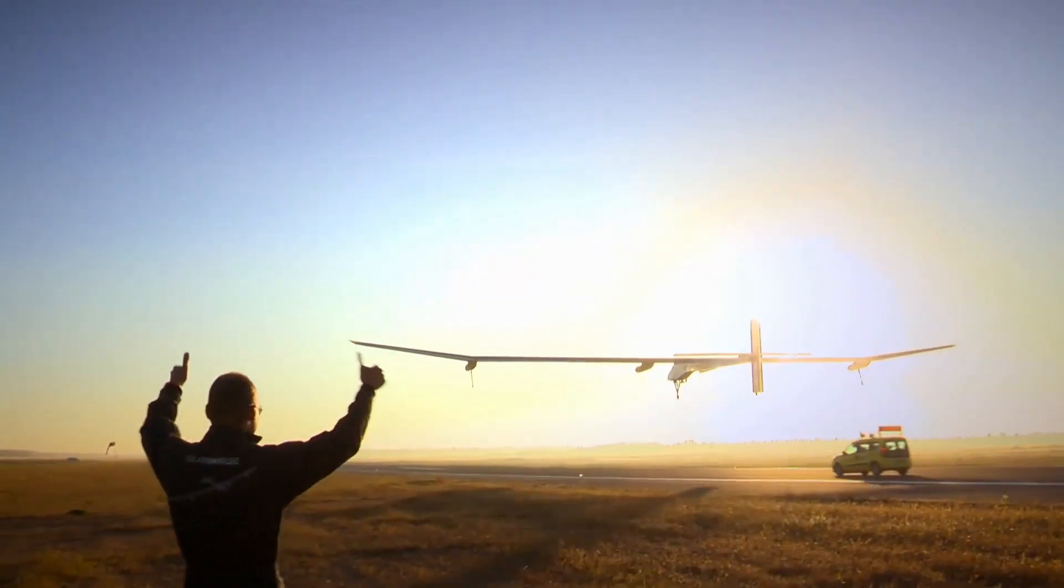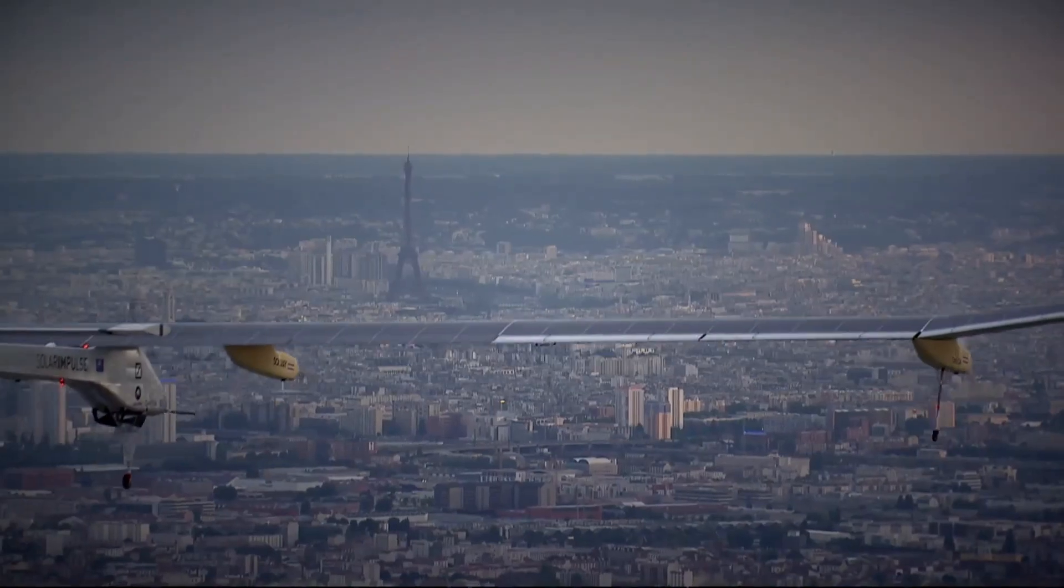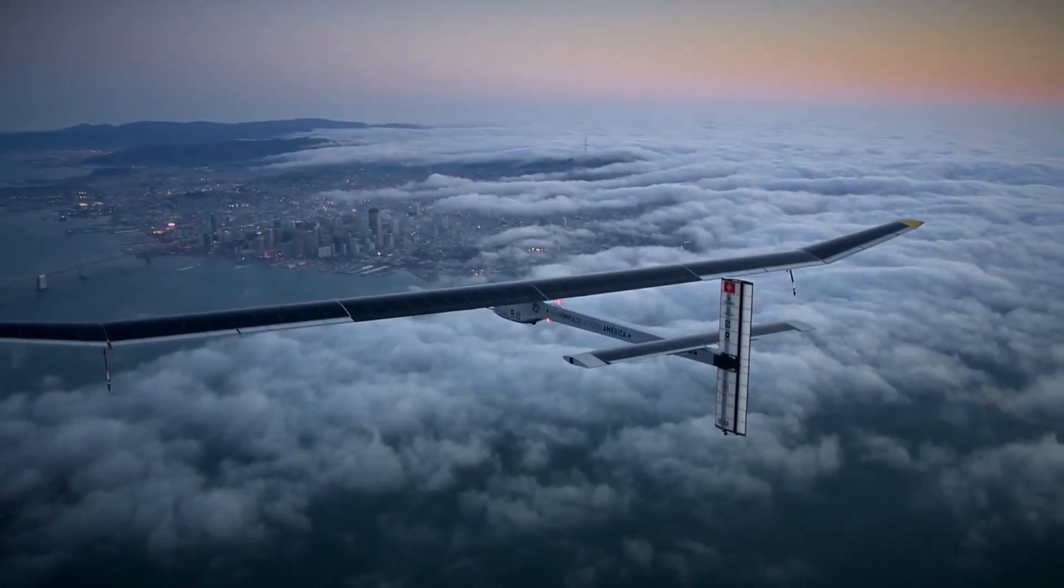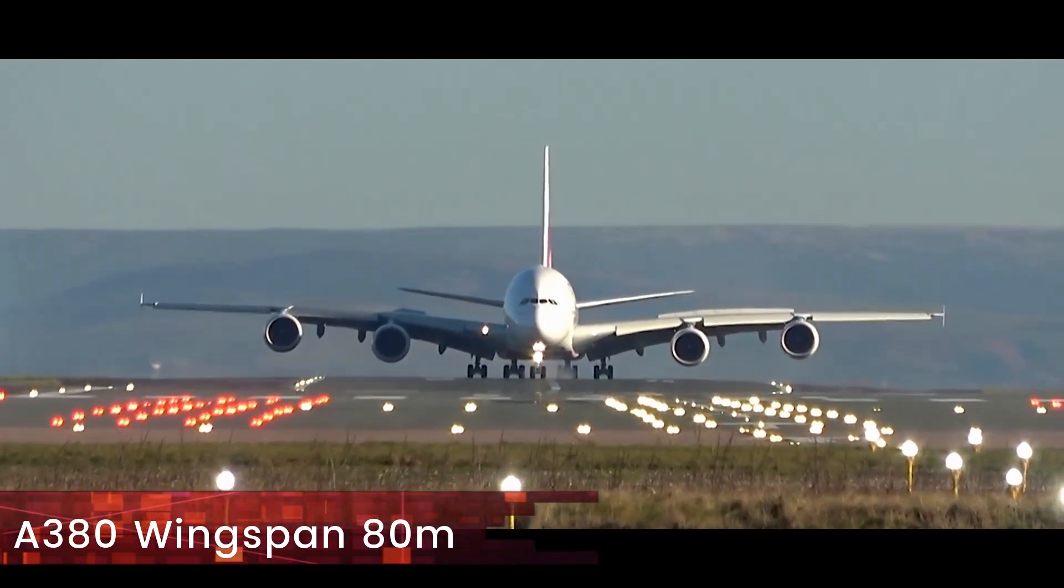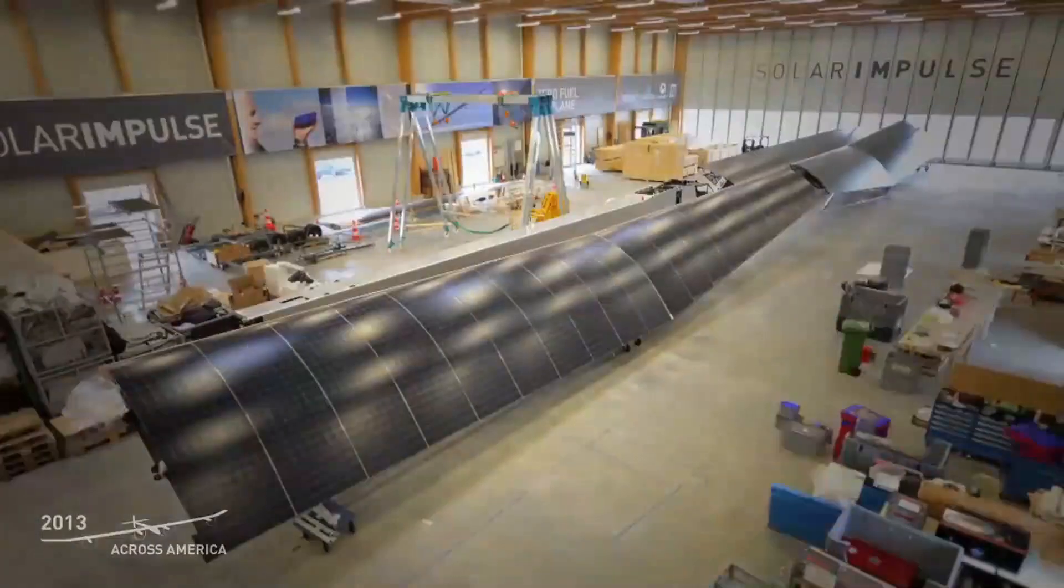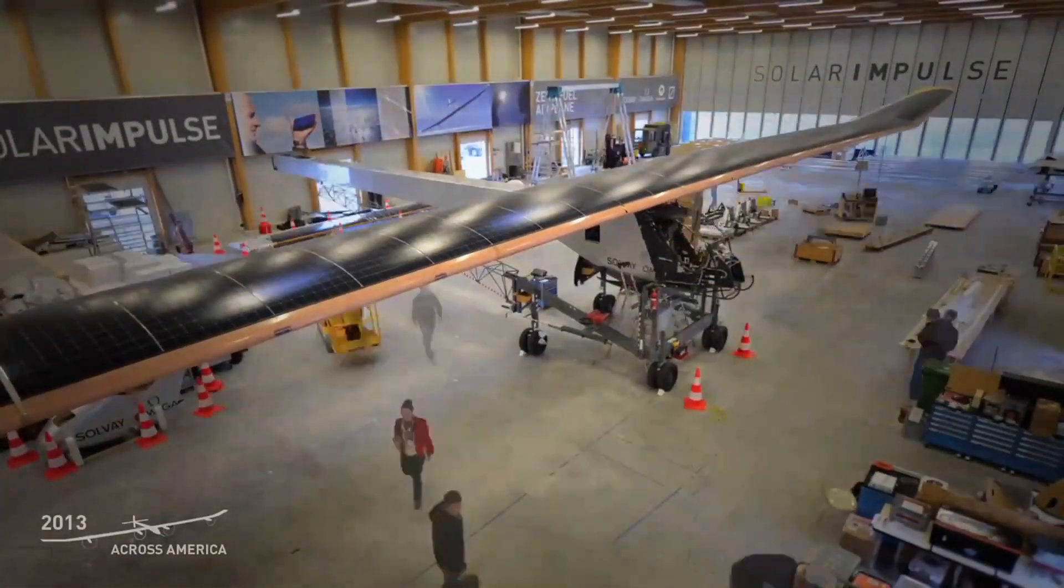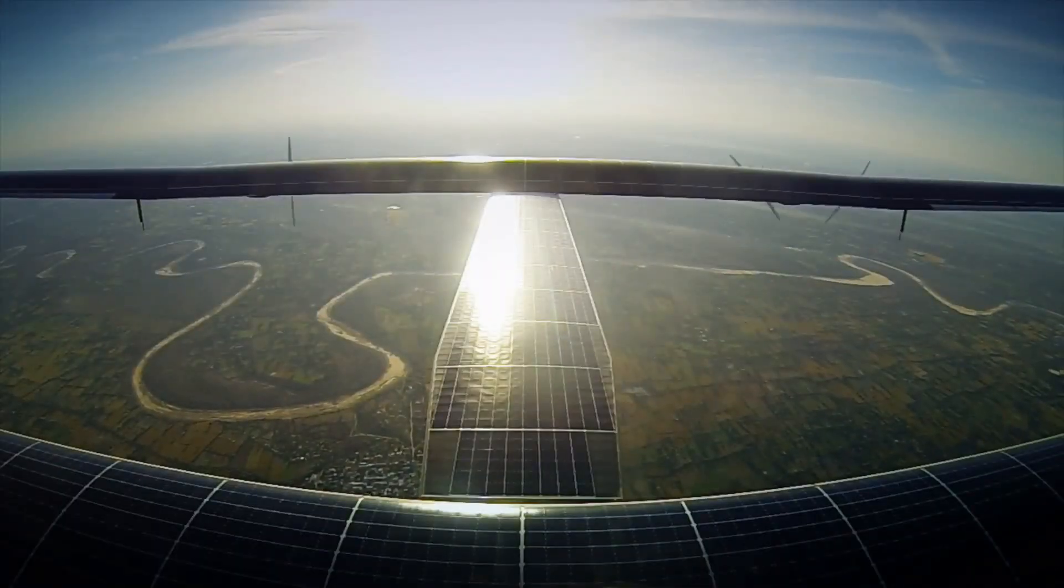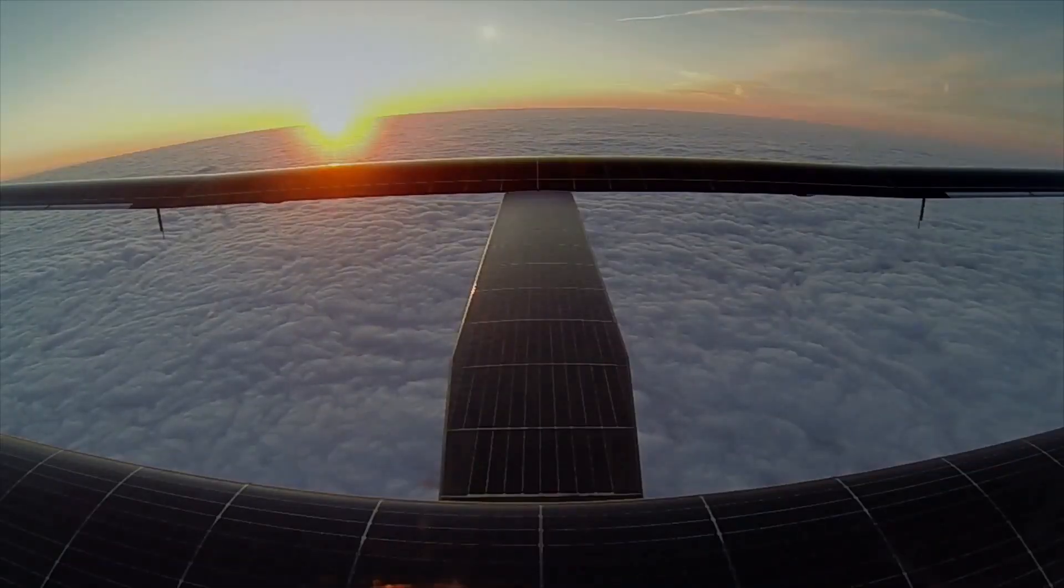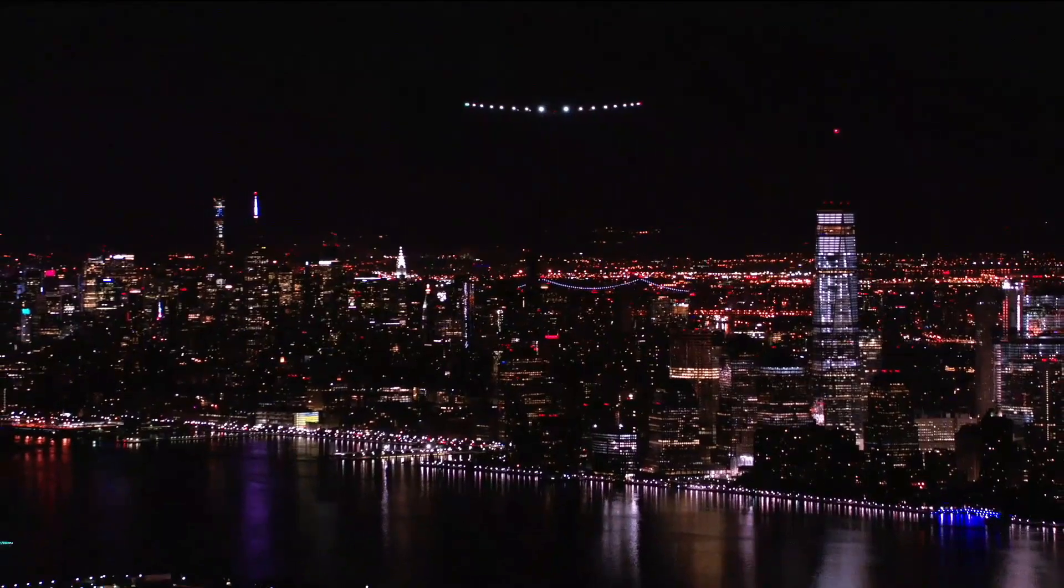The solar impulse 2 designated SI-2 was an extraordinary aircraft. It had a wingspan of 71.9 meters which was comparable to the A380 the world's biggest passenger airliner. It had 17,248 photovoltaic cells that covered the top of the wings, fuselage and tail plane over an area of 269.5 square feet. The total PV output was rated at 66 kilowatts peak.